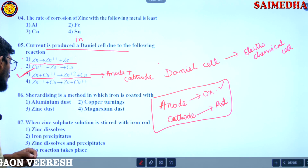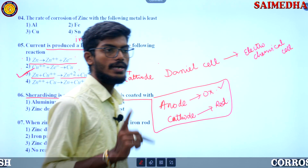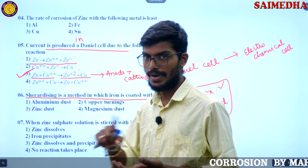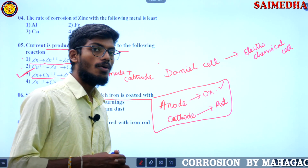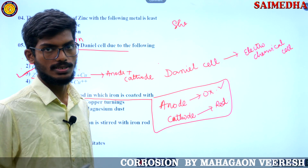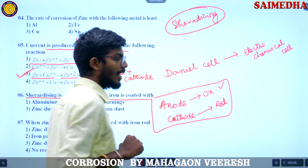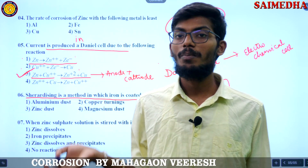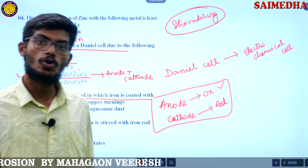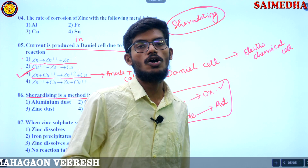Now we go to the next question. Sherardizing is a method in which iron is coated with — we have discussed many different types like metal spraying, anodizing, chromizing, and sherardizing. Sherardizing means we have a powder — the metal which is to be coated on another metal should be made into powder, then sprayed on the other metal.